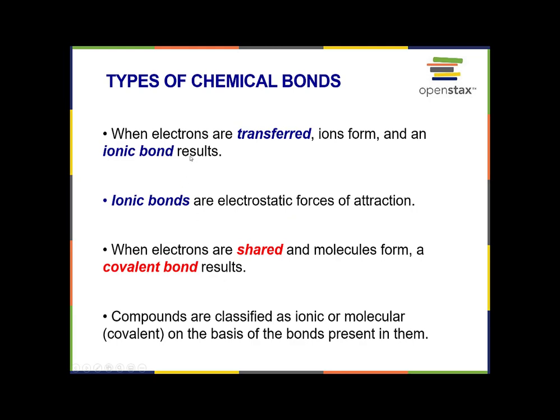When electrons are transferred, ions form and an ionic bond results. Ionic bonds are electrostatic forces of attraction. Alternatively, when electrons are shared and molecules form, a covalent bond results. Compounds are classified as either ionic or molecular — also called covalent — on the basis of the bonds present in them.